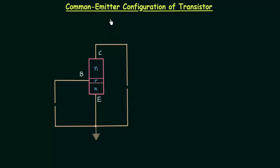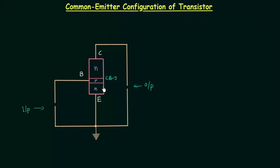In common emitter configuration, emitter is common to the input side and to the output side. This side is the input side and this side is the output side. We are using an NPN transistor. This junction here is the collector-base junction and this junction is the emitter-base junction.